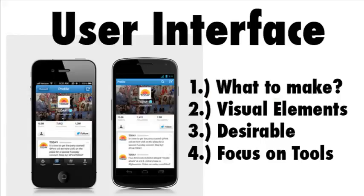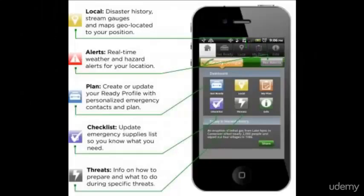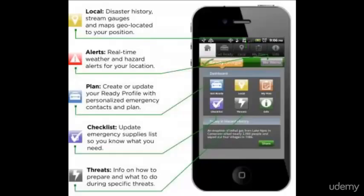UI is short for user interface. In the software world, this means everything that shows up on your screen — the images, hex diagrams, and widgets, as well as the color, size, and positioning.